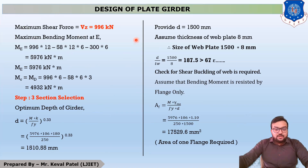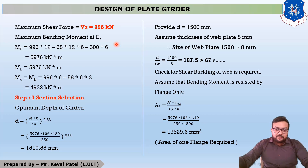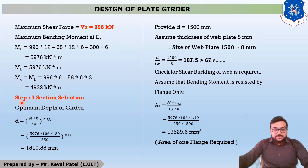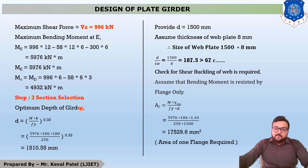This concludes the revision of shear force and bending moment from Example 1. The difference between unstiffened and stiffened plate girders appears in Step 3 — section selection — which will be discussed in the next lecture. Thank you.